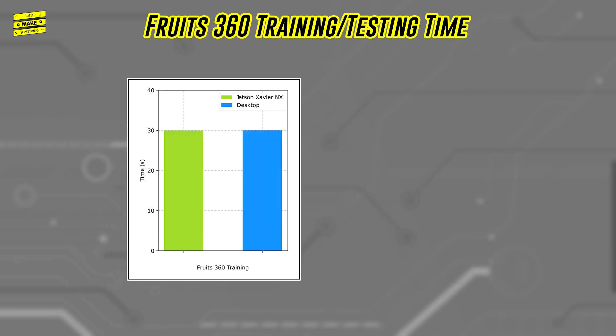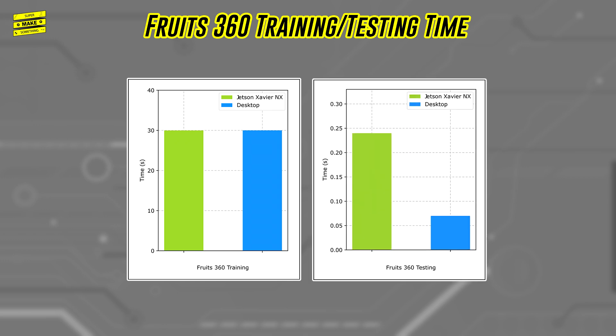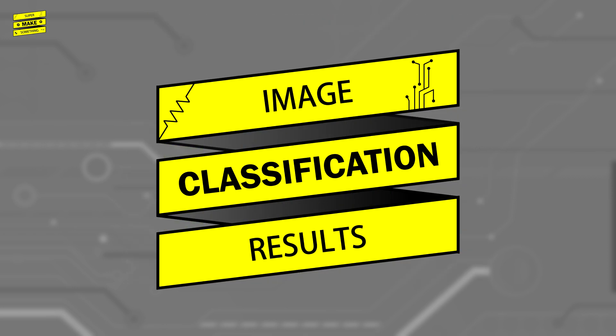Classifying 10 new images from each of the categories was also fast, taking 0.24 seconds on the Xavier NX and 0.07 seconds on my desktop. Let's now take a look at the results.